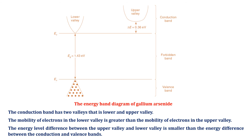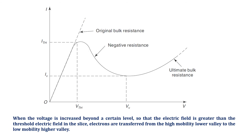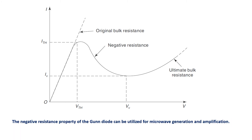When the voltage is increased beyond a certain level so that the electric field is greater than the threshold electric field in the slice, electrons are transferred from the high-mobility lower valley to the low-mobility upper valley. As a result, the flow of electrons actually slows down so that the current decreases with increase in voltage, as shown in the figure, thereby exhibiting negative resistance.